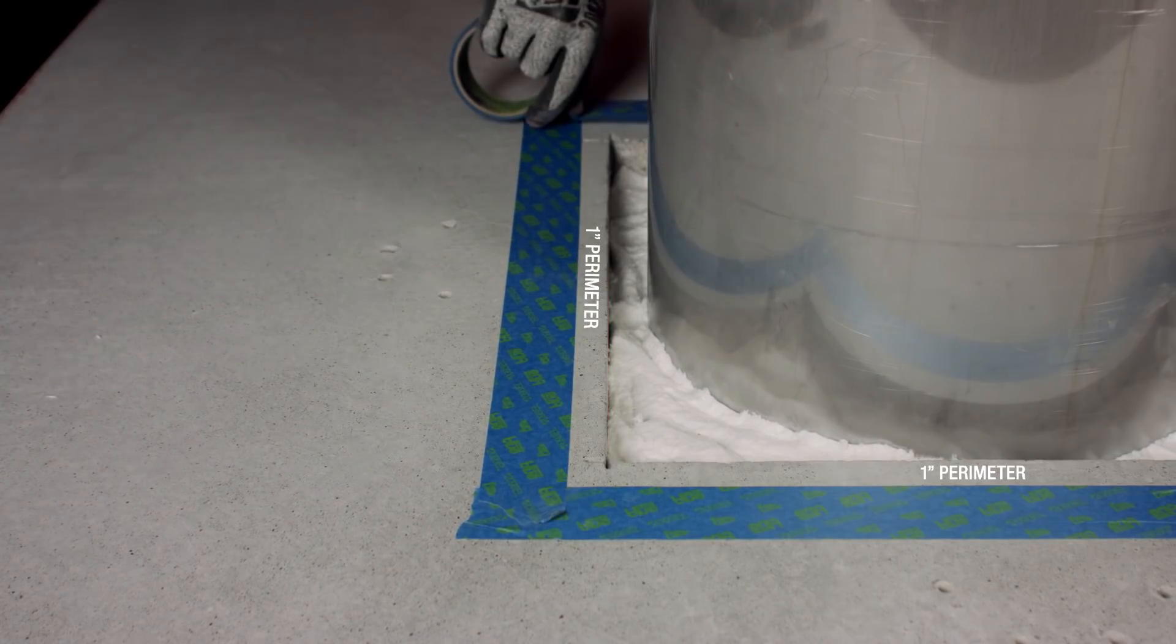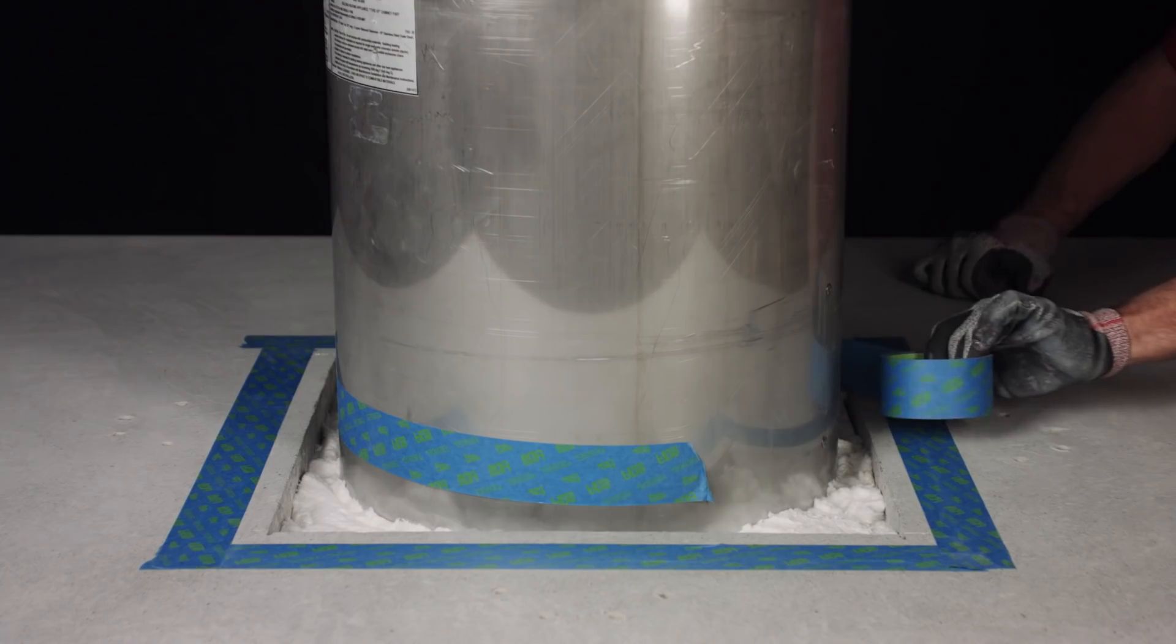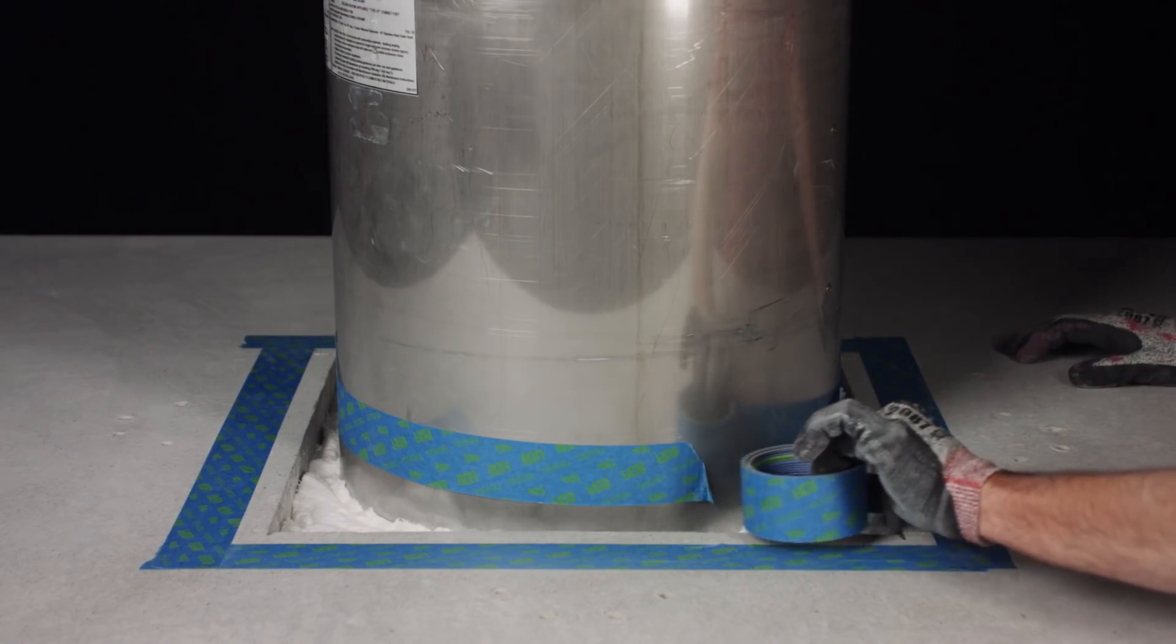Use painter's tape to create a perimeter one inch outside the opening in the floor or ceiling as shown. This step will ensure a clean finish.